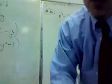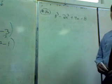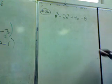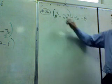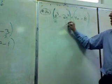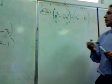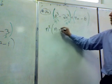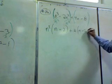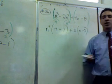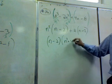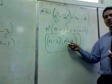Let's try number 36: n cubed minus 2n squared plus 4n minus 8. Grouping the first two terms — n squared is in common — we take out n squared and get n squared times (n minus 2), since n squared times n equals n cubed and n squared times negative two equals negative 2n squared. For the second group, four is in common, giving us 4(n minus 2). Now n minus 2 is the common factor, so we write (n minus 2)(n squared plus 4) as our answer.